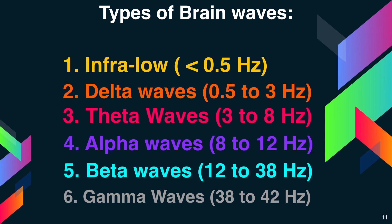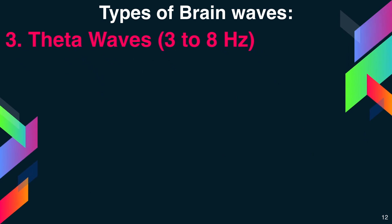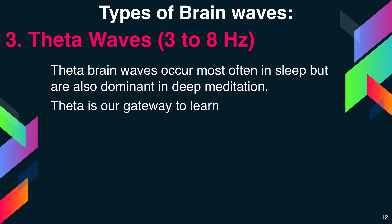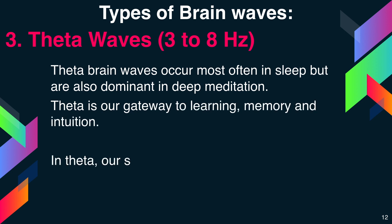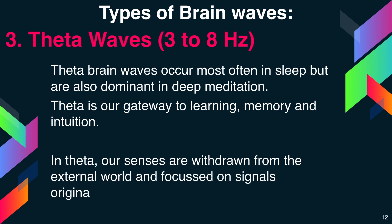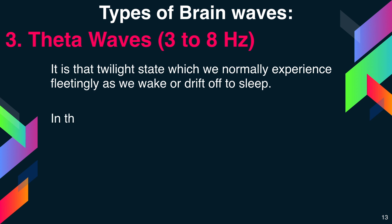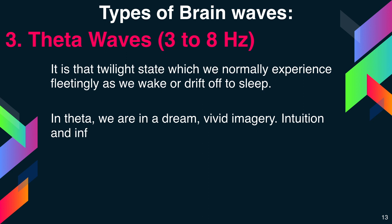The third type of wave is theta waves, between 3 to 8 hertz. Theta brain waves occur most often in sleep but are also dominant in deep meditation. Theta is our gateway to learning, memory and intuition. In theta, our senses are withdrawn from the external world and focused on signals originating from within. It is that twilight state which we normally experience fleetingly as we wake or drift off to sleep — a state of vivid imagery, intuition and information beyond our normal conscious awareness.